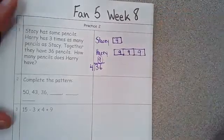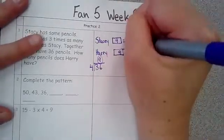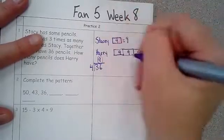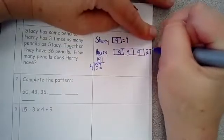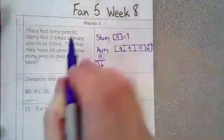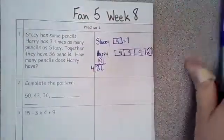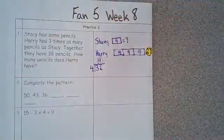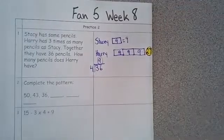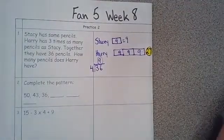Okay, so that means that Stacy has nine pencils and Harry has nine plus nine plus nine, Harry has 27. The question says how many pencils does Harry have? Harry has 27 pencils. Draw the boxes. Okay, they will help you to solve these.